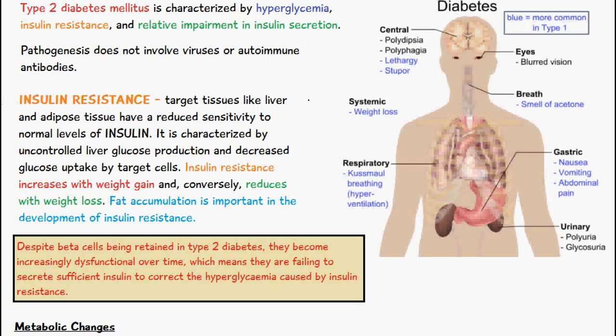Insulin resistance is increased with weight gain and conversely reduces with weight loss. Fat accumulation on the body is important in the development of insulin resistance, so a person is more likely to develop insulin resistance if they are gaining weight and have fat accumulation.